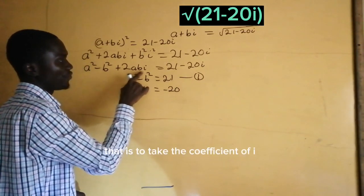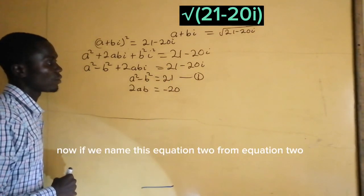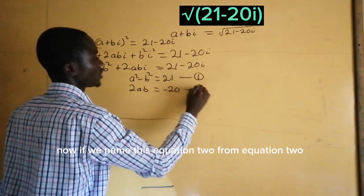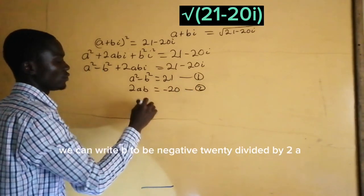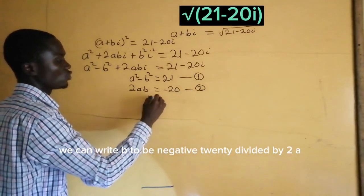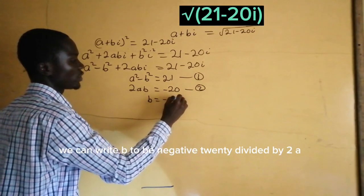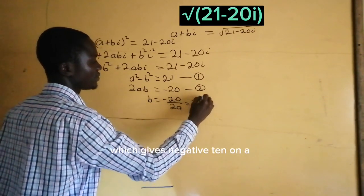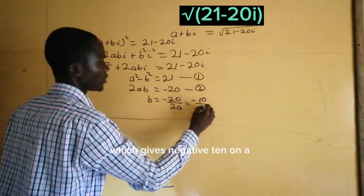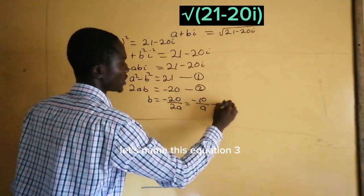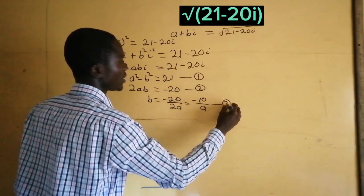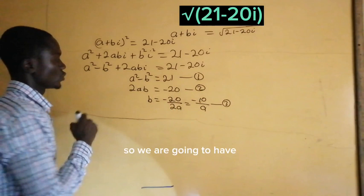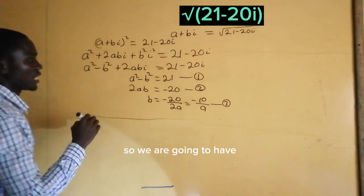That is, we take the coefficient of i. Now, from equation 2, we can write b to be negative 20 divided by 2a, which gives negative 10 over a. Let's name this equation 3 and then substitute it into equation 1.